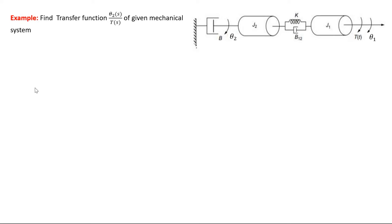Next we find the transfer function of a rotational mechanical system. In the linear system, x was the linear displacement; here in rotational motion, the applied torque is T(t), theta1 is the displacement of J1, and theta2 is the displacement of J2. Theta2(S) is taken as the output and T(S) is the input, so we need to find the transfer function theta2(S) / T(S).